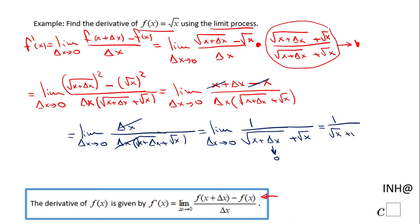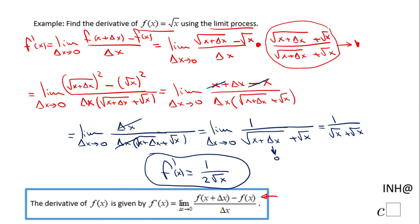The limit of 1 over (square root of x plus square root of x) — that is nothing else than 1 over 2 square root of x. This is the derivative of this function: the derivative of square root of x is 1 over 2 square root of x. If you enjoyed this little clip, don't forget to click the like button and come back on C Squared for more help. Thank you.